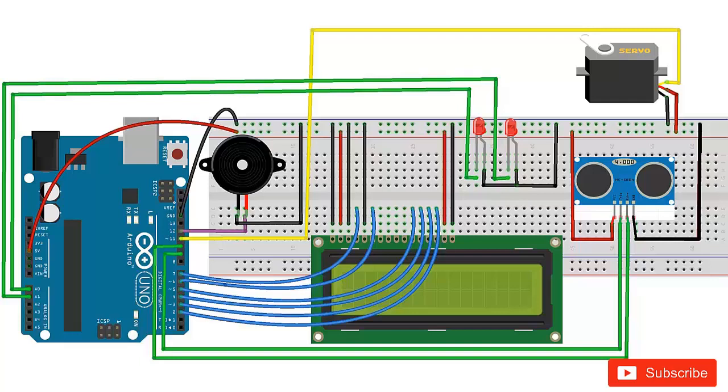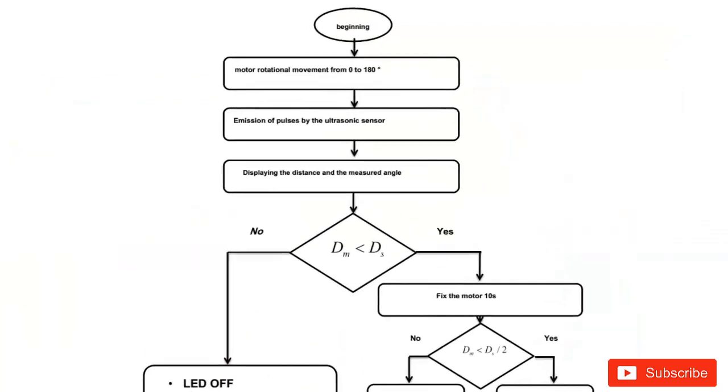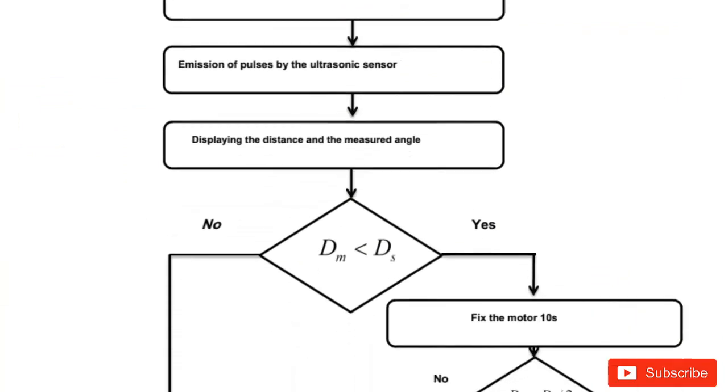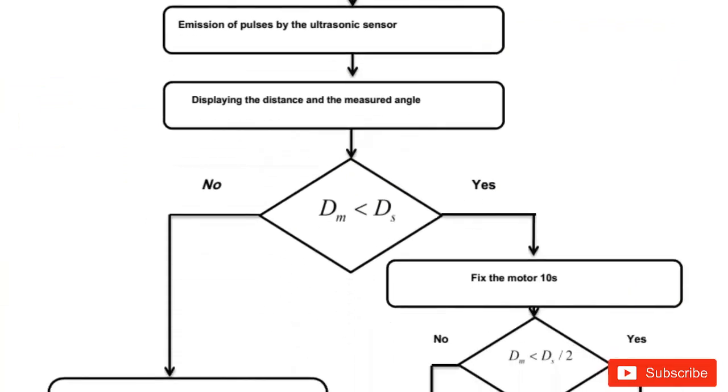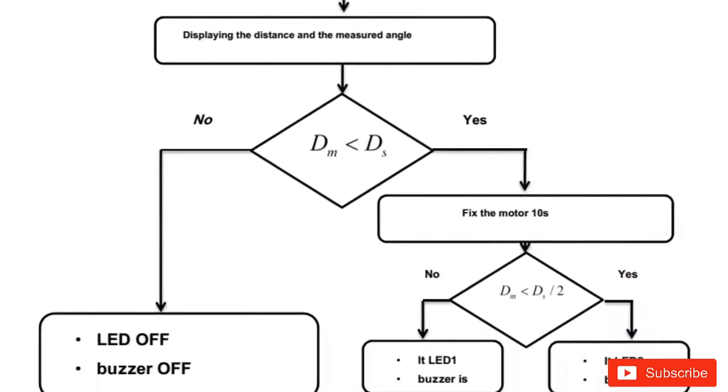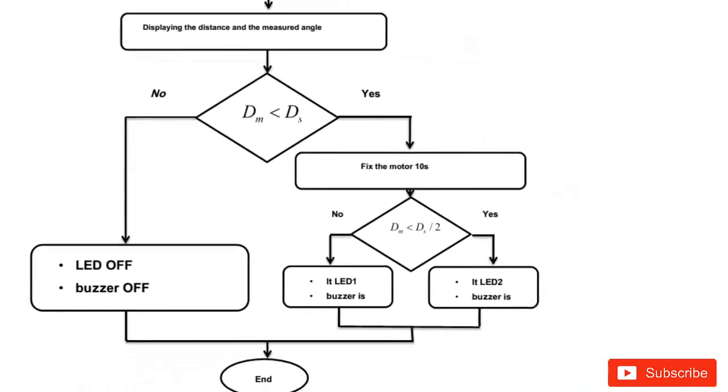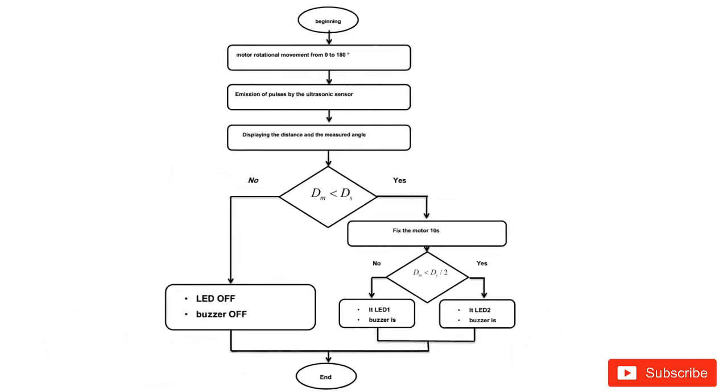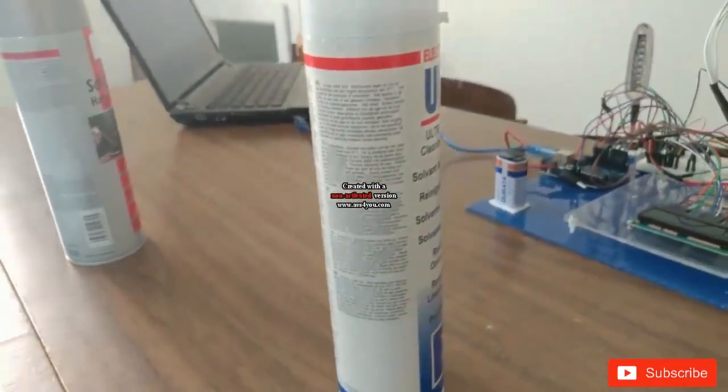This is the algorithm that is given inside the flowchart. How the radar model works: it simply detects the distance and measures angle. If distance dm is smaller than ds, then LED bar is off and buzzer is off. But if it is greater, then motor rotates through 180 degrees, LED one is on, and LED two is off.